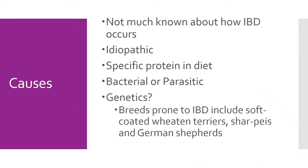Now I'm going to discuss some of the causes. There's a lot of gray area — not much research has been done, and most causes are identified as idiopathic, meaning no known cause. If you change to a different protein in your animal's diet, that can cause an allergic-type response leading to IBD. Bacteria or parasites in the intestines can also cause IBD. Genetics are speculated to play a role, and breeds prone to IBD include Soft-Coated Wheaten Terriers, Shar-Peis, and German Shepherds.